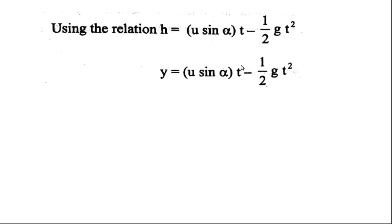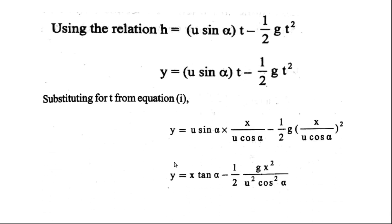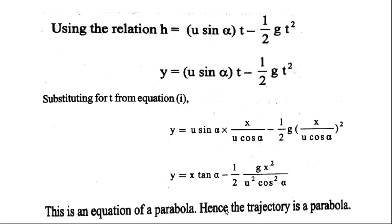Substituting t into the vertical equation, we get y = x tan alpha − (g x²)/(2 u² cos² alpha). This is the equation of a parabola. Hence, the path of a projectile is a parabolic path.